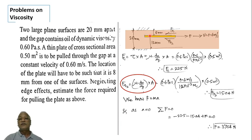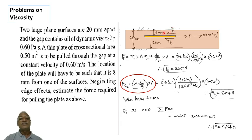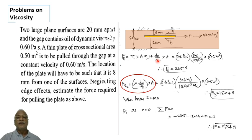There is viscous resistance on both the upper side (fv1) and lower side (fv2) of the plate. To calculate viscous force, we need shear stress from Newton's law of viscosity. The viscous force fv1 equals shear stress multiplied by area, where shear stress equals mu into v divided by thickness of the film, multiplied by area.